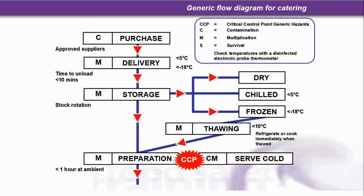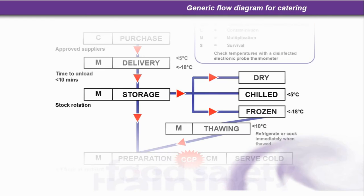Let's look at more detail you can put on the flow diagram so that an environmental health officer can easily follow the process steps. Purchase should be from approved suppliers. Delivery should be at less than 5 degrees C, or less than minus 18 degrees C if frozen. Time to unload from delivery: less than 10 minutes. Storage: maintain a good stock rotation system like first in, first out. Chilled fridges should be less than 5 degrees C — as close to 1 degree C as possible. Frozen: less than minus 18 degrees C. Thawing: at less than 10 degrees C; refrigerate or cook immediately when thawed. During preparation: less than 1 hour at ambient temperature.